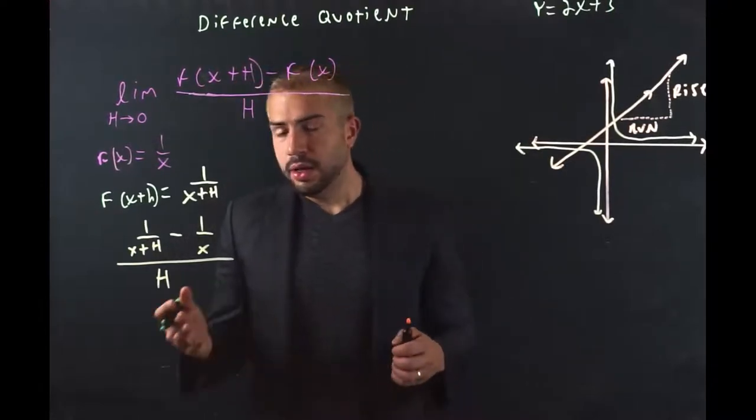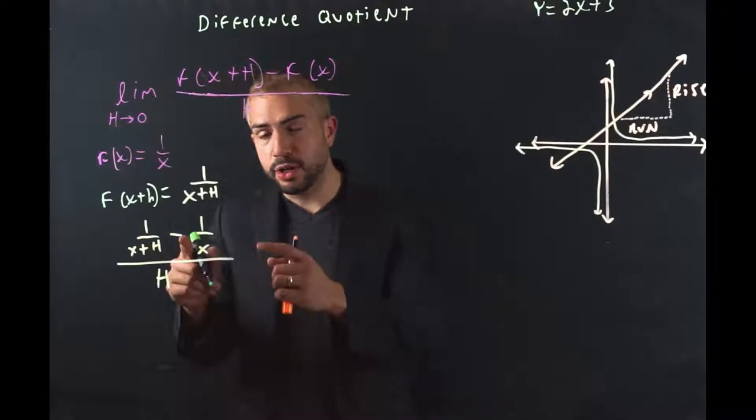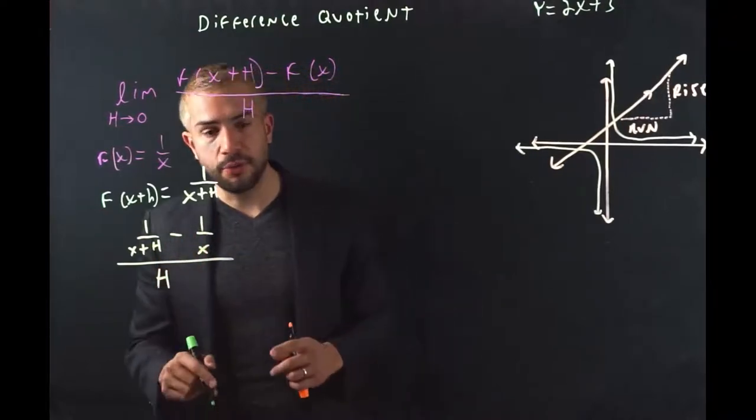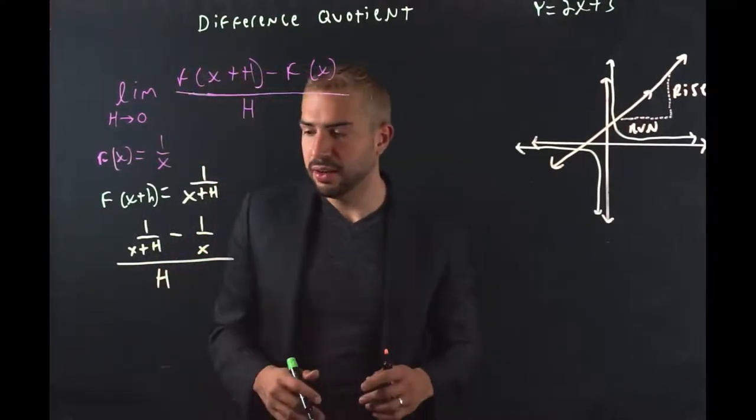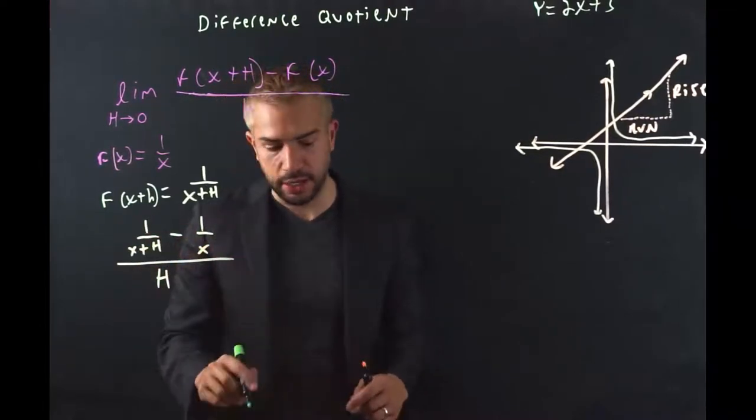Essentially, this is it. We're done. But in math, we always like to simplify. So we have a complex fraction here. Let's figure out the top first by doing the LCD. Defining the least common denominator of both, which is x times (x + h). Then we cross multiply.